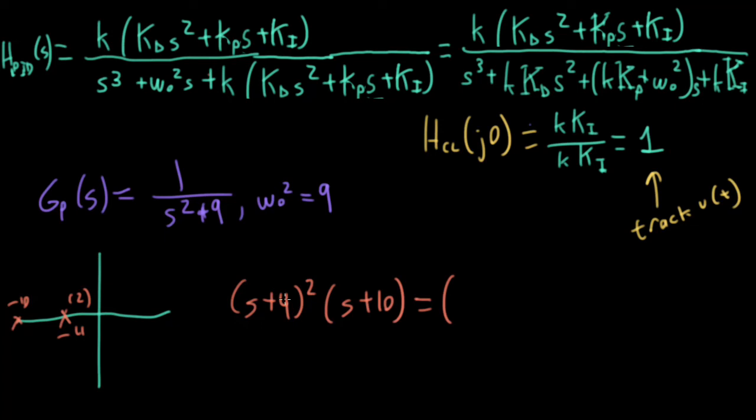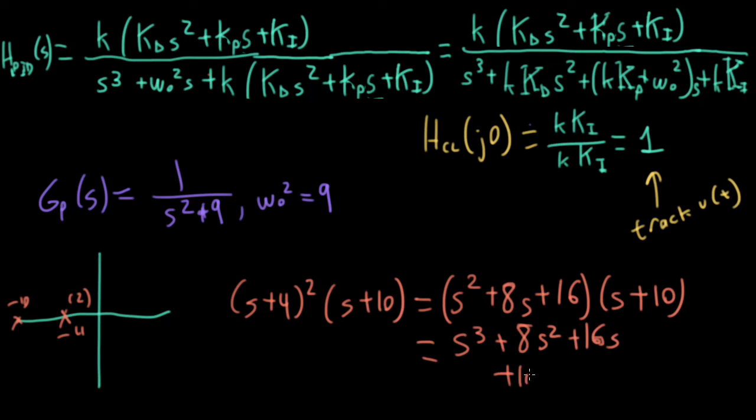Okay, so slogging through this, I'll have s squared plus eight s plus 16. This is all times s plus 10. Okay, so I have s cubed plus eight s squared plus 16 s. And then I would have 10 s squared plus 80 s plus 160. And adding these all up, I have s cubed plus 18 s squared plus 96 s plus 160.